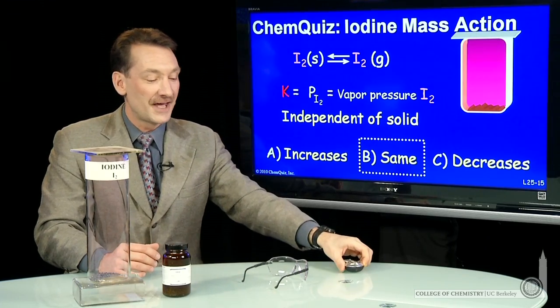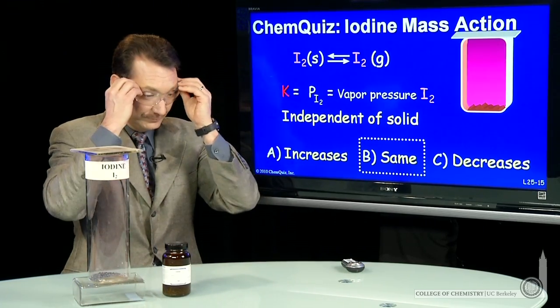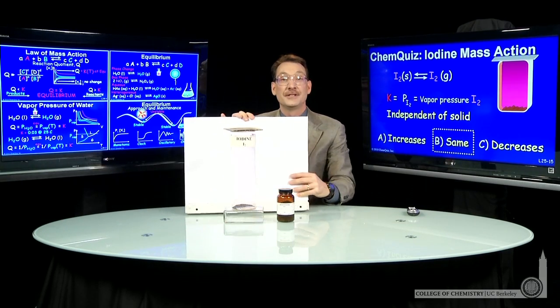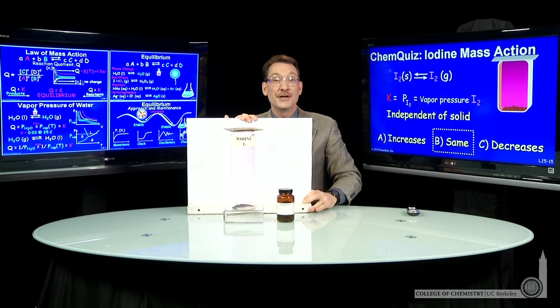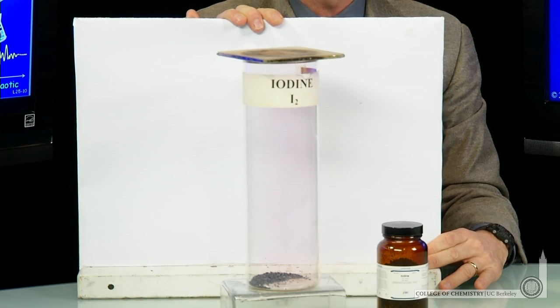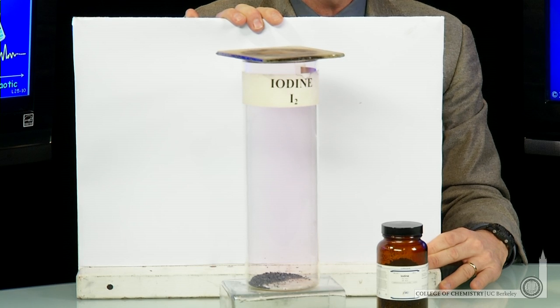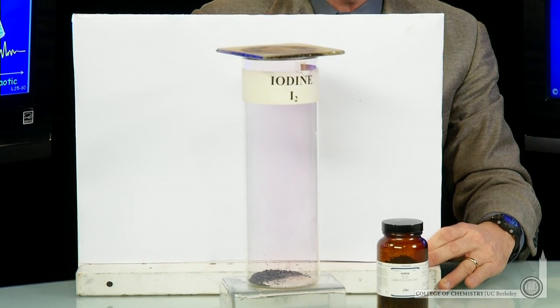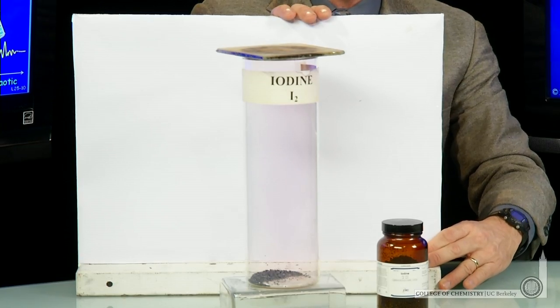Let's actually see if that happens. What I have here is the solid and vapor in equilibrium. And I think you can see the solid and vapor in equilibrium, the pale vapor color of the iodine vapor. What I'm going to do is add a little solid iodine and see if that changes.